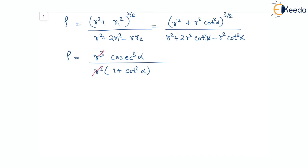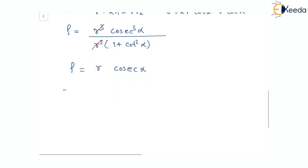r squared cancels out and we have rho equal to r times cosec alpha, which gives rho by r equal to cosec alpha. Since alpha is a constant, cosec alpha is also constant. Hence rho by r is a constant. This is what was asked, so we are done. Thank you.